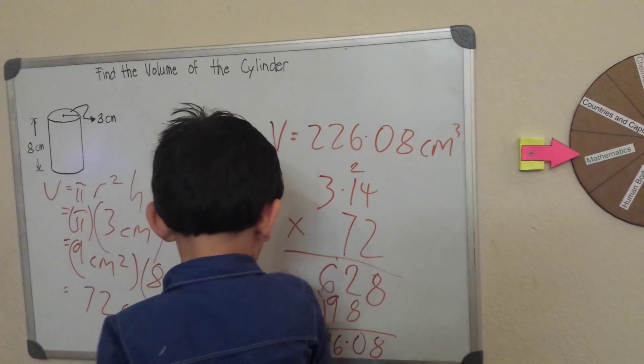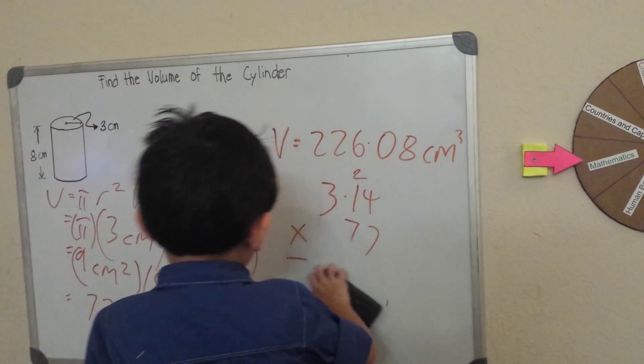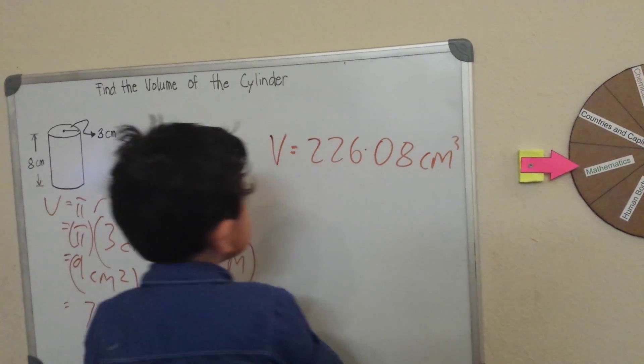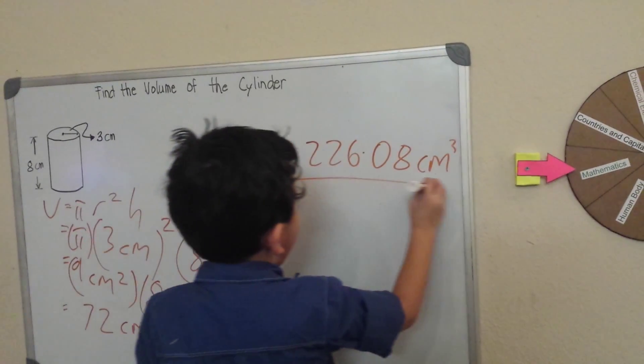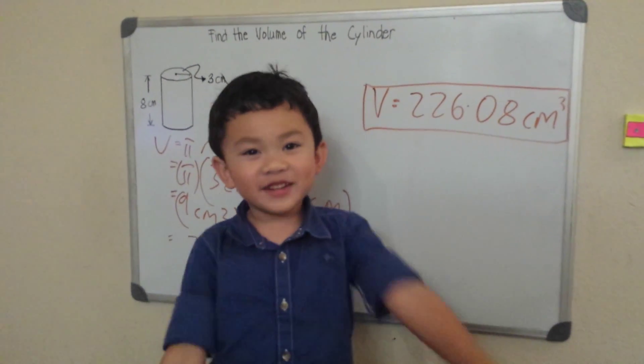I need to erase this and then I will rectangle this. It's area of a circle. Thanks for watching and have a great evening.